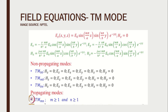These are the four field equations of the TM mode: EX, HX, EY, and HY. All of them contain a term E0 multiplied by some sine and cosine components. This E0 term is a function of the electric field in the direction of propagation — it is the electric field term EZ.